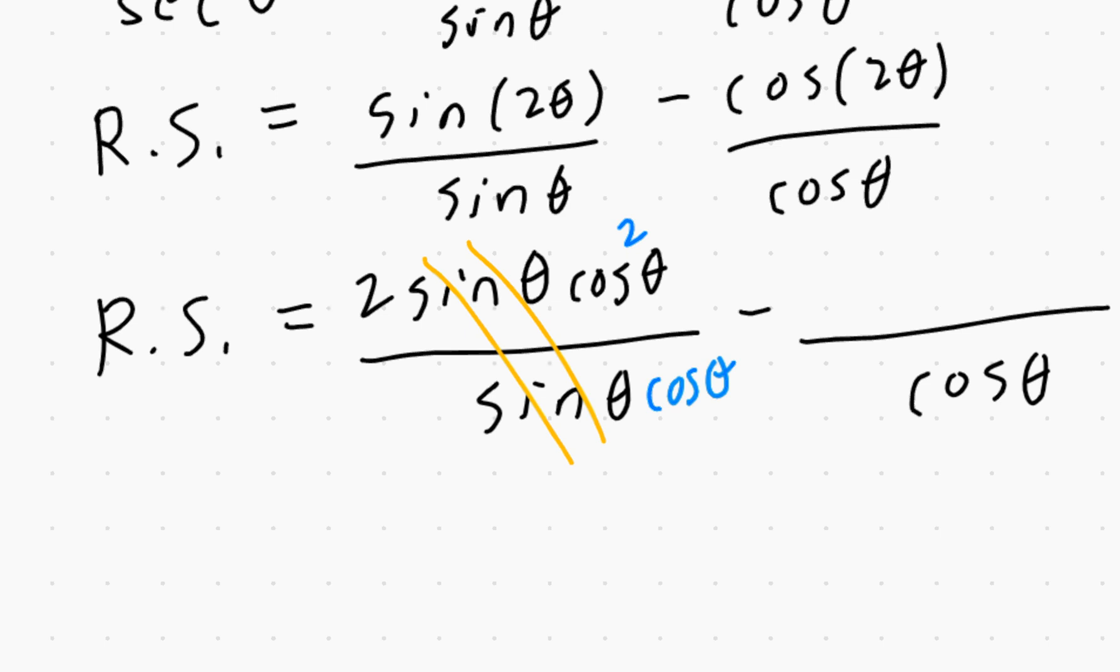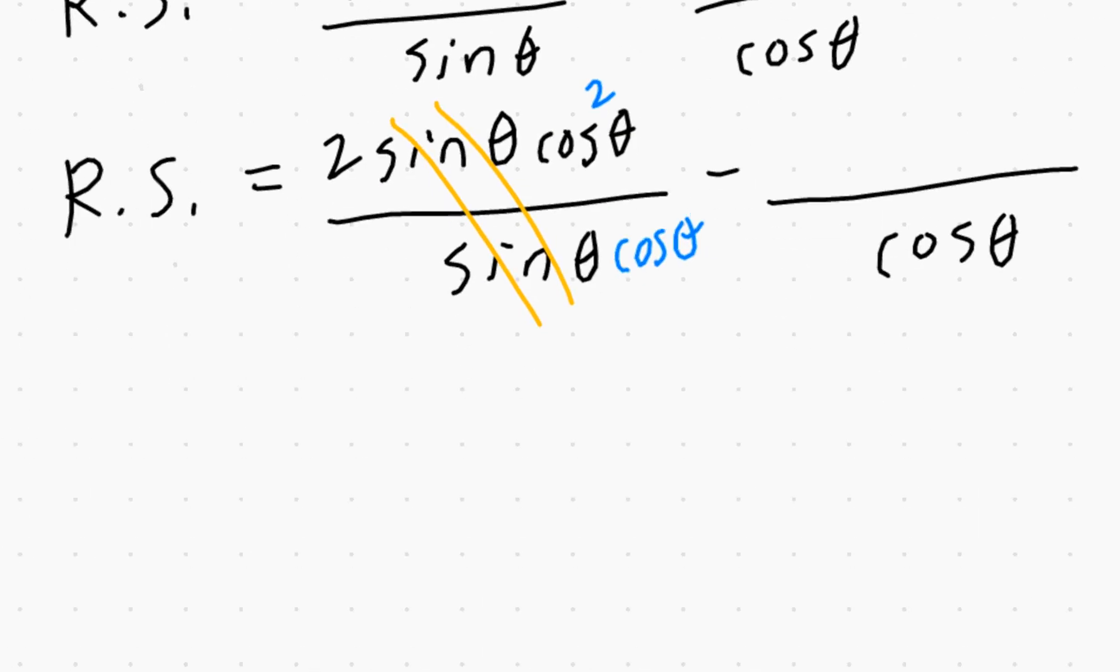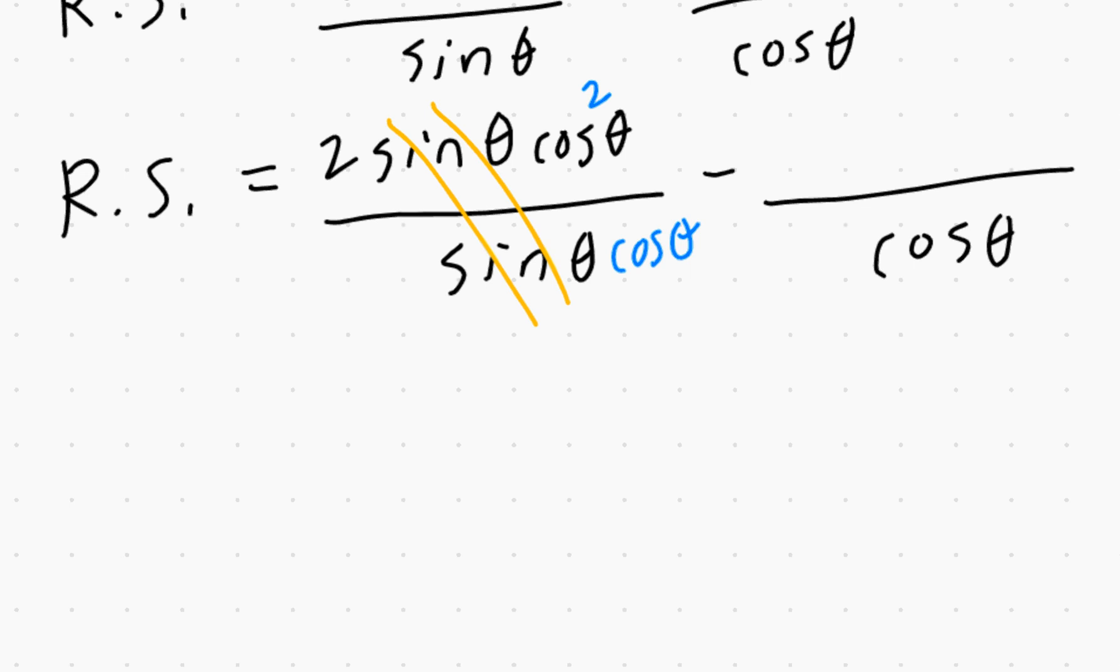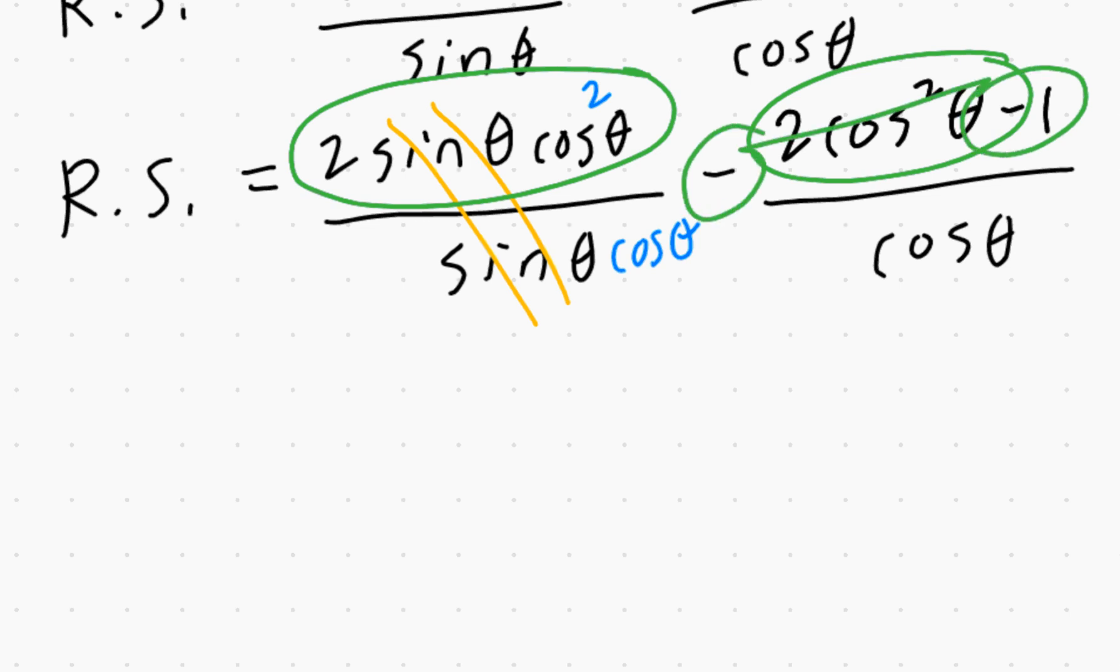Now again, you begin with the end in mind. Because I'm looking for sec θ, I'm really looking for 1 divided by cos θ. So here's what I'm going to do next. I will select 2cos²θ - 1 instead of the other two. Why is that? Do you see what I'm seeing here? This is 2cos²θ minus 2cos²θ—that's going to become 0. And that negative 1 will become positive 1 when you divide that by cosine.